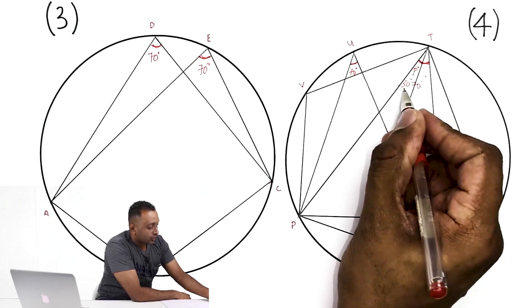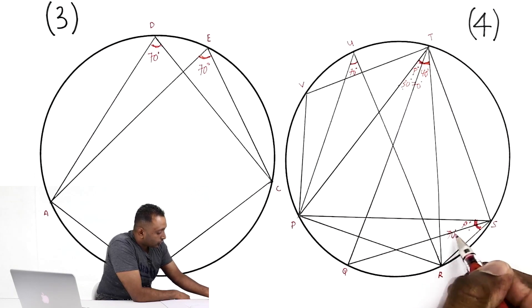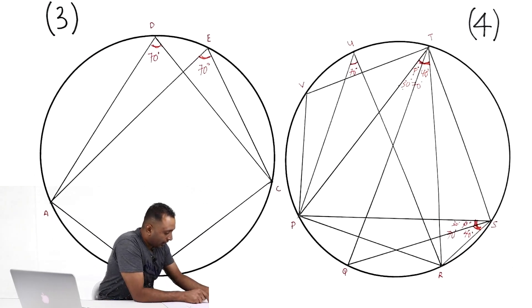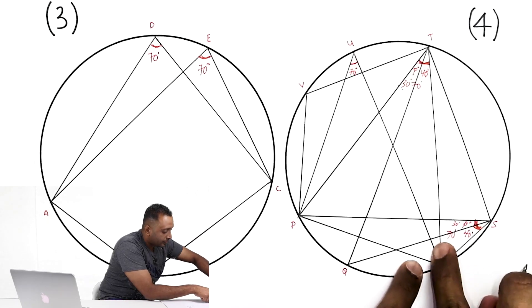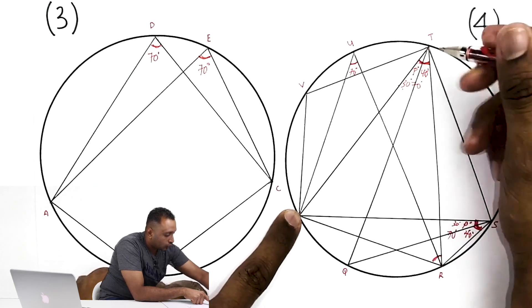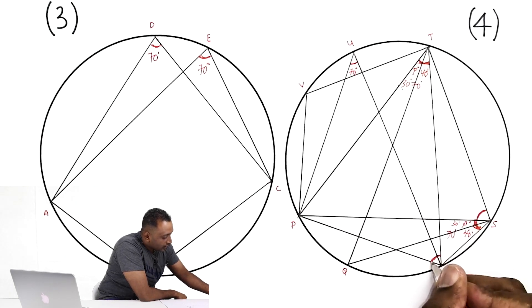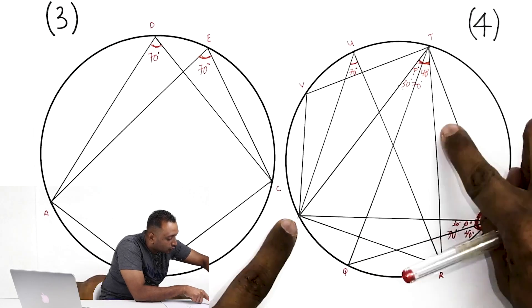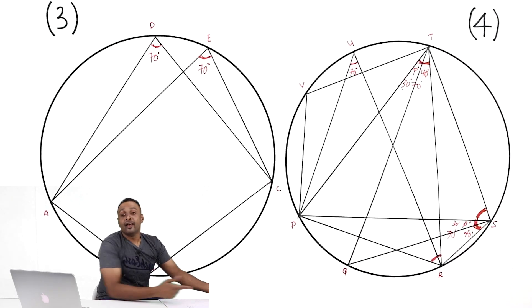For example, if P is 30 degrees, then the other part is 40 degrees because the total must be 70. Now look at angle R — it goes to points P and T. From P and T there is another angle at S, so angle at R and angle at S should be equal, because both angles start from the same two points P and T, subtending the same arc. Practice makes perfect — that is the only way to score.